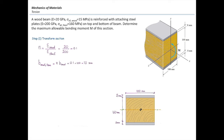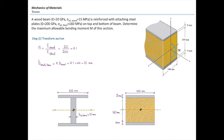Now let me draw that transformed section. The steel plate on top is unchanged, and the same is true for the bottom part. The middle wood is transformed into equivalent steel with a width of 10 mm. Now I need to determine the moment of inertia for this section and the location of the centroid. The centroid is trivial because the section is symmetric, so it is located at half of the total height.